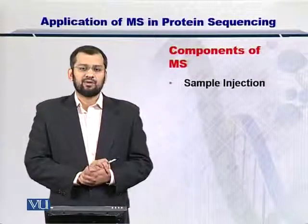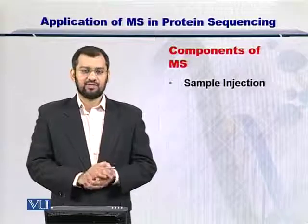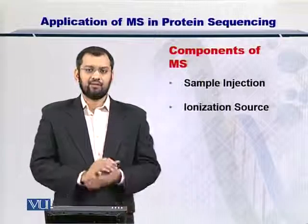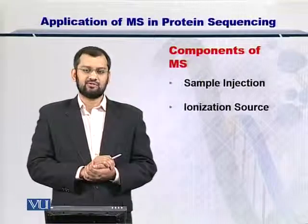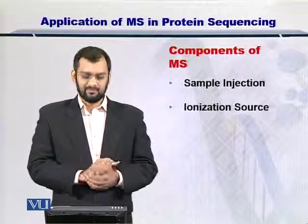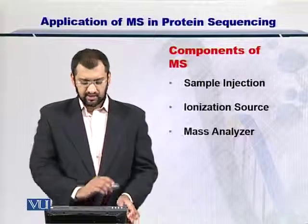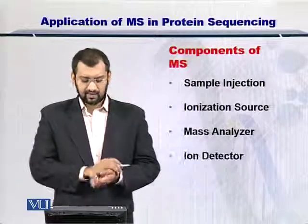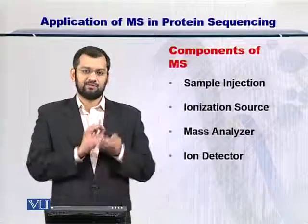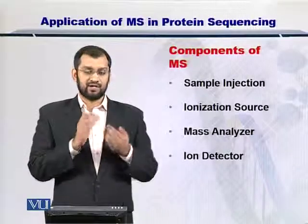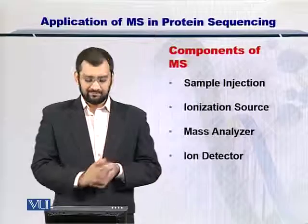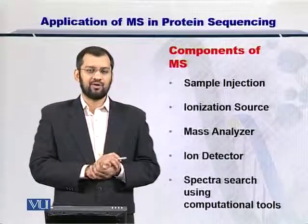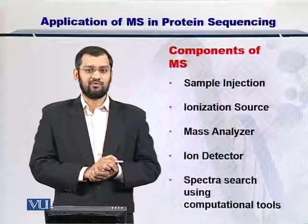The components of a mass spectrometer: first, you inject your sample, then you ionize it by having an ionization source placed very close to the sample. Next, you analyze the mass present in the sample molecules. You detect these particles, which are now carrying a charge and hence are ions. And you have computational and bioinformatics tools to actually arrive at the sequence of these proteins.